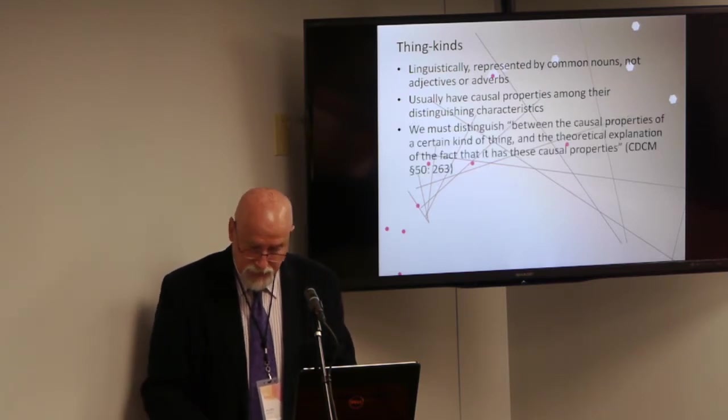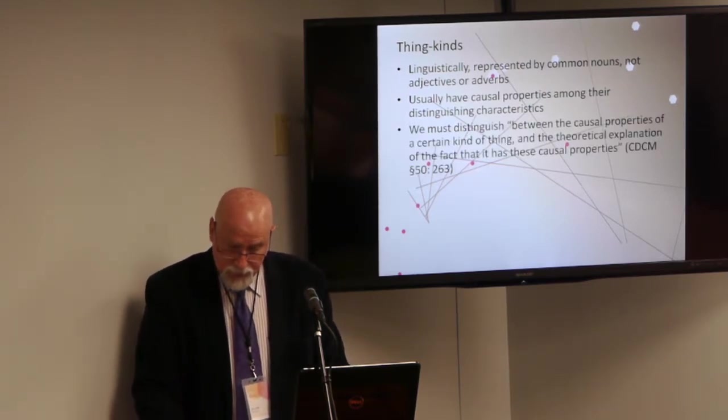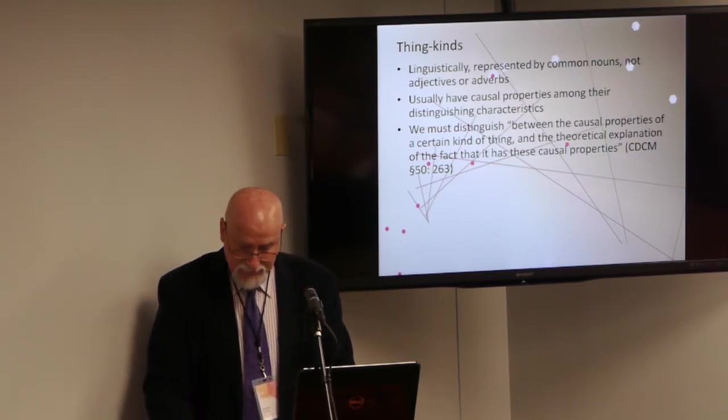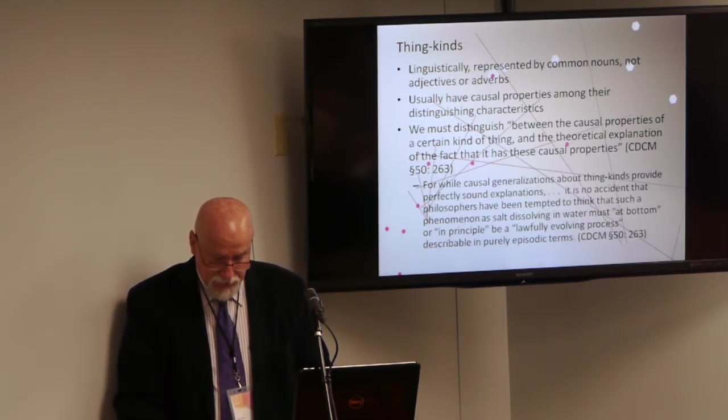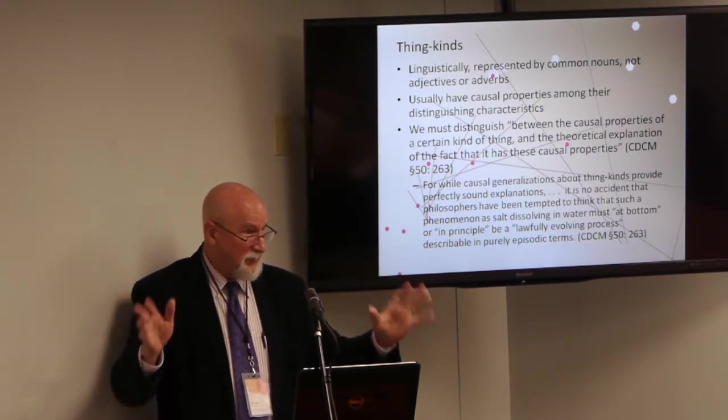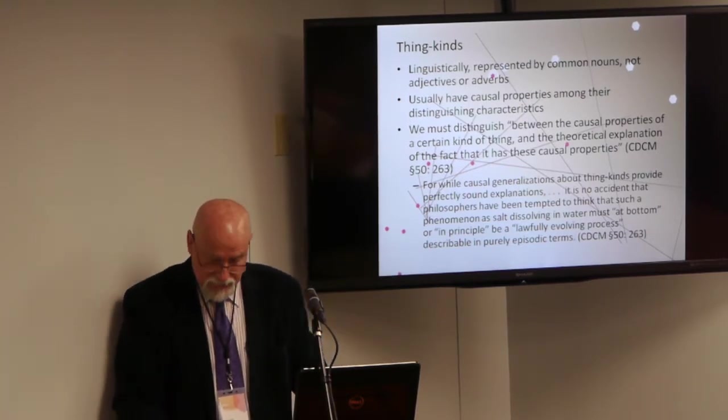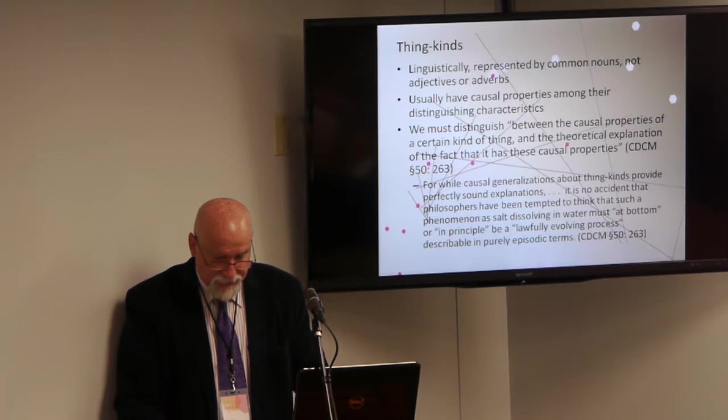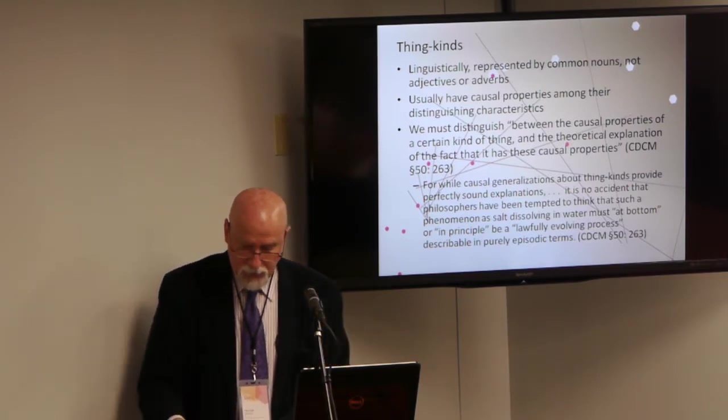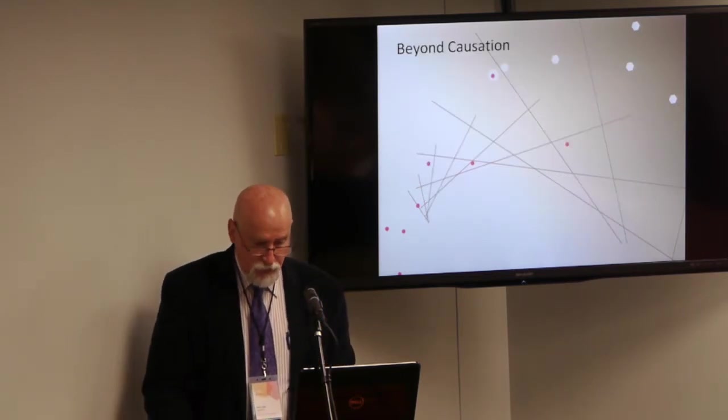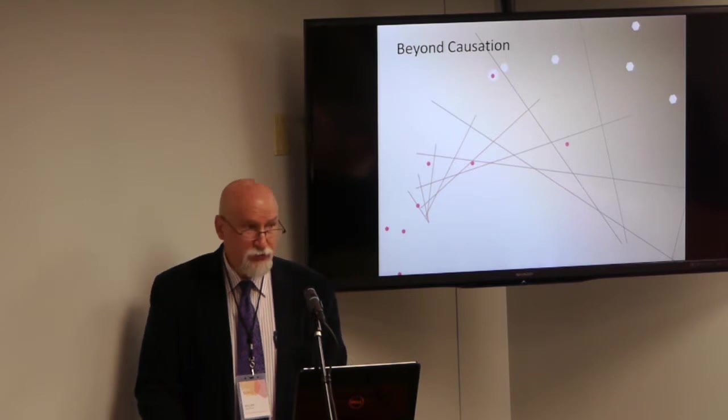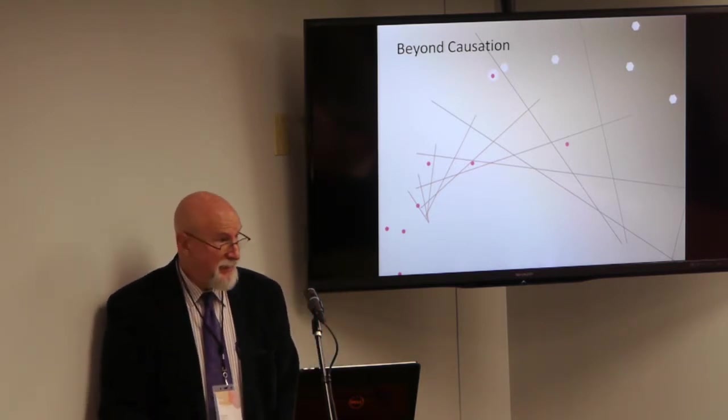Things get complex quickly in thinking about the role kind terms have in causal explanations because thing kinds usually have causal properties themselves among their distinguishing characteristics. And this is where I hope to pick up the thread of Sellars' thought. For he thinks it is important to distinguish between the causal properties of a certain kind of thing and the theoretical explanation of the fact that it has these causal properties. For while causal generalizations about thing kinds provide perfectly sound explanations, that's something I want you to remember, it is no accident that philosophers have been tempted to think that such a phenomenon as salt dissolving in water must, at bottom or in principle, be a lawfully evolving process, describable in purely episodic terms.